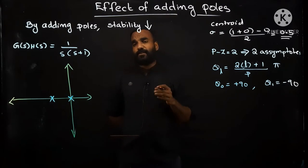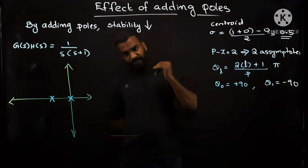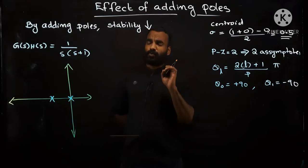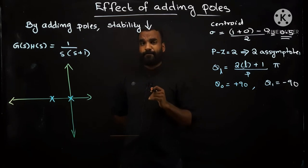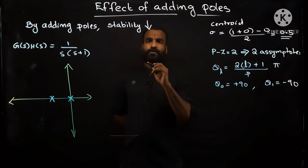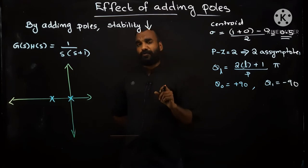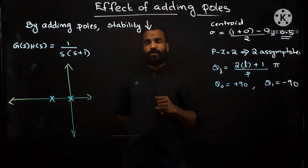Welcome back to our lecture series in linear control systems. In today's class we are discussing the effect of adding a pole or zero to an existing system. Till now we know how to draw a root locus diagram, how to comment about stability by varying k, by checking the locus. We completed those portions in the last class and today we are checking what happens if you add one more pole or one more zero.